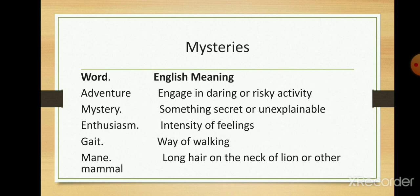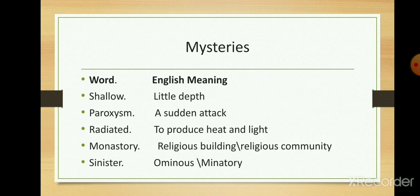Now the English meanings. Adventure: engaged in daring or risky activity. Mystery: something secret or unexplainable. Enthusiasm: intensity of feelings. Gate: way of walking. Mane: long hair on the neck of a lion or other mammal. Shallow: little depth. Paroxysm: a sudden attack. Radiated: to produce heat and light. Monastery: a religious building or religious community. Sinister: ominous or premonitory.